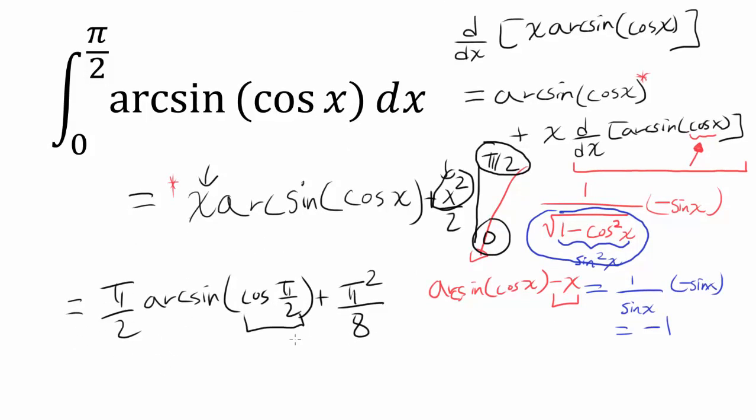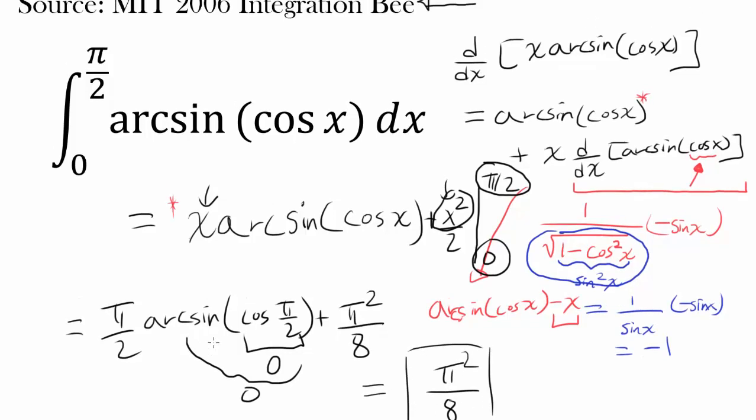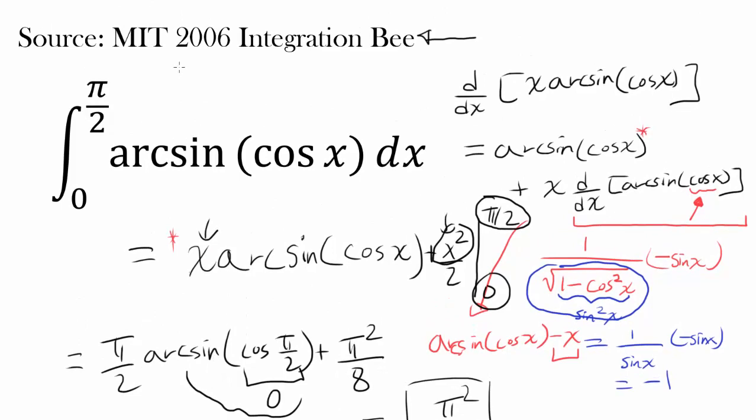Cosine of π/2 is 0. Arcsin of 0 is 0. So π/2 times 0 is 0. This entire expression simplifies to π²/8. So we have our answer. The integral from 0 to π/2 of arcsin(cos x) dx is π²/8.